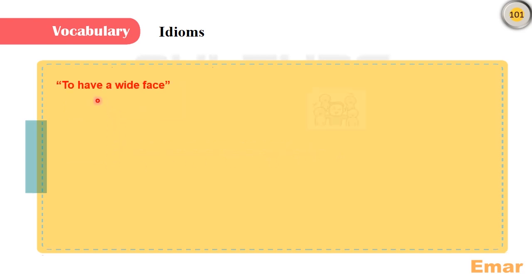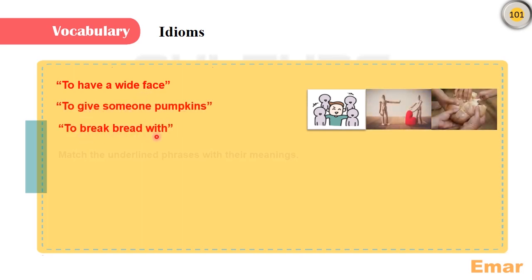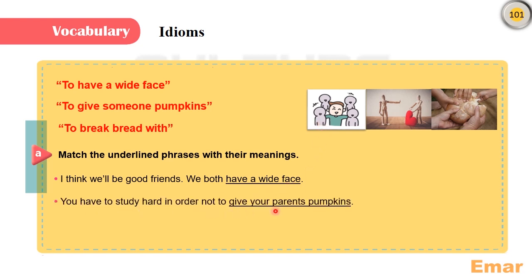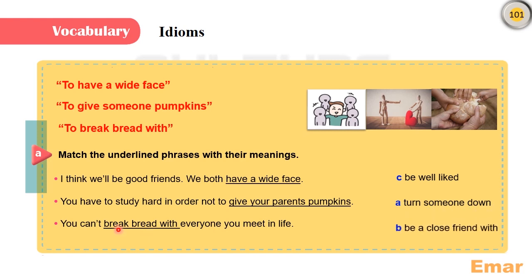We have three idioms: to have a white face, to give someone pumpkins, and to break bread with. Let's match the underlying phrases with their meanings. 'I think we will be good friends, we both have a white face' — to have a white face means to be well liked. 'You have to study hard in order not to give your parents pumpkins' — means to turn them down. 'You can't break bread with everyone you meet in life' — means to be a close friend with somebody.